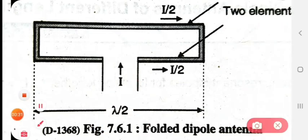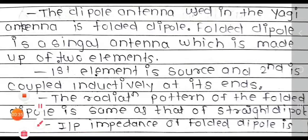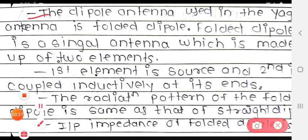The first description point is that the dipole antenna used in the Yagi antenna is the folded dipole. This antenna is used in the Yagi-Uda antenna, which is what we used for TV reception in earlier times. That is what we call the Yagi-Uda antenna.